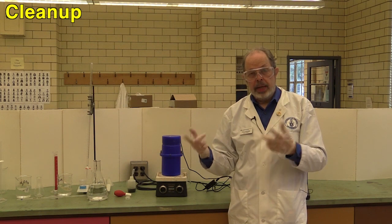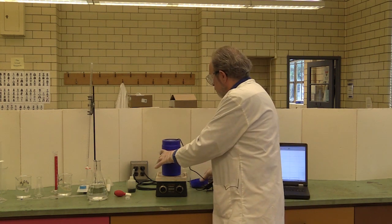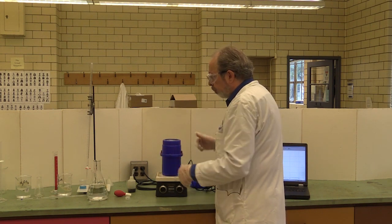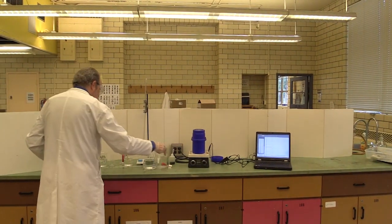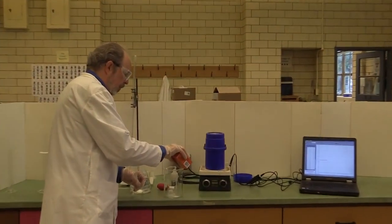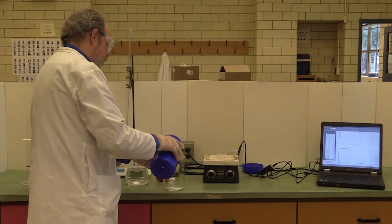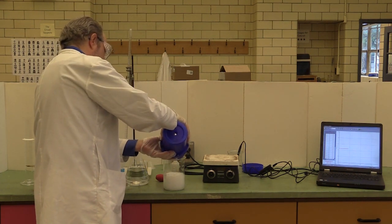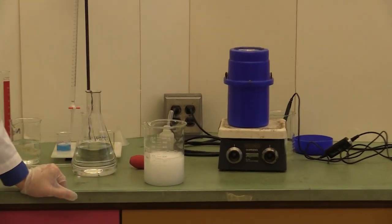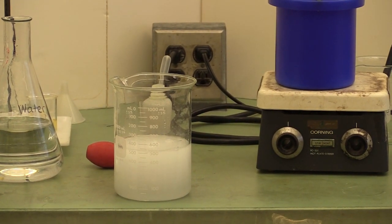Once you have finished each run, you will need to dispose of the excess acid. So take the lid off the calorimeter. Take the temperature probe out. And you'll be neutralizing it by using an excess of sodium bicarbonate. So we'll use a small beaker and about five mils of sodium bicarbonate. And then dump the contents into a large beaker. You wait until the fizzing stops and then pour the neutralized acid into a sink full of water, being careful that you don't throw the magnetic stirrer down the drain.